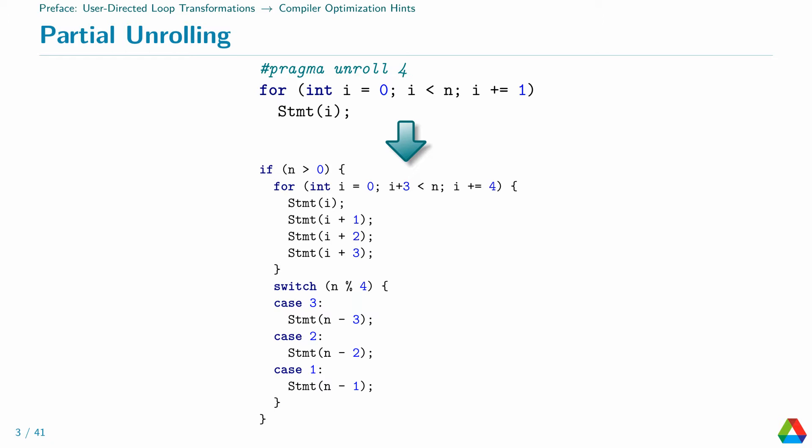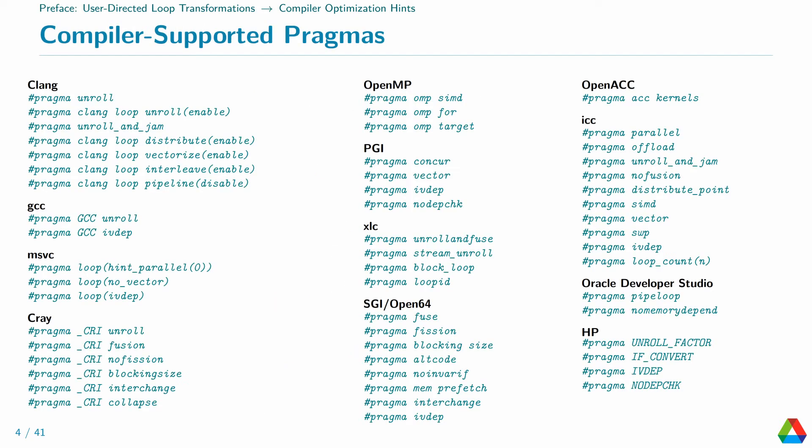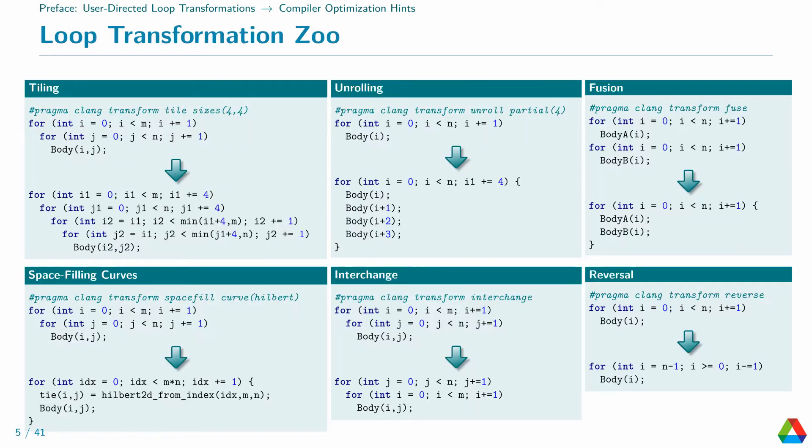One could just write the replacement code directly, but it's just easier to tell the compiler to do it by adding a pragma directive in front of the loop. Most general purpose compilers support such kinds of pragmas, but they are not standardized by C or C++, and so every compiler has a different set of directives they support with different syntax. Very many different loop transformations are commonly known in the literature, but very few are actually supported by compilers as pragmas. Only unrolling is somewhat universal.